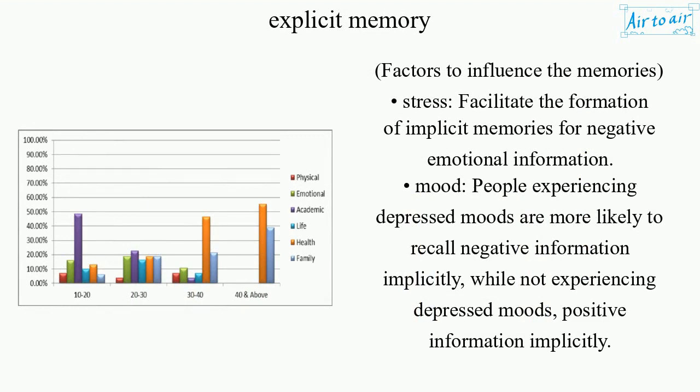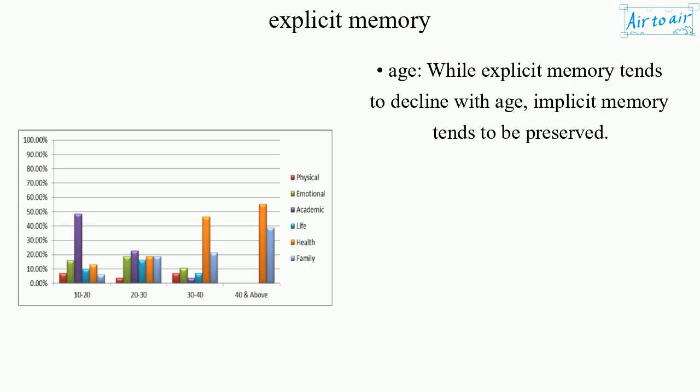Several factors influence memory. Stress can facilitate the formation of implicit memories for negative emotional information. Mood also plays a role — people experiencing depressed moods are more likely to recall negative information implicitly, while those not experiencing depressed moods tend to recall positive information implicitly. Regarding age, while explicit memory tends to decline with age, implicit memory tends to be preserved.